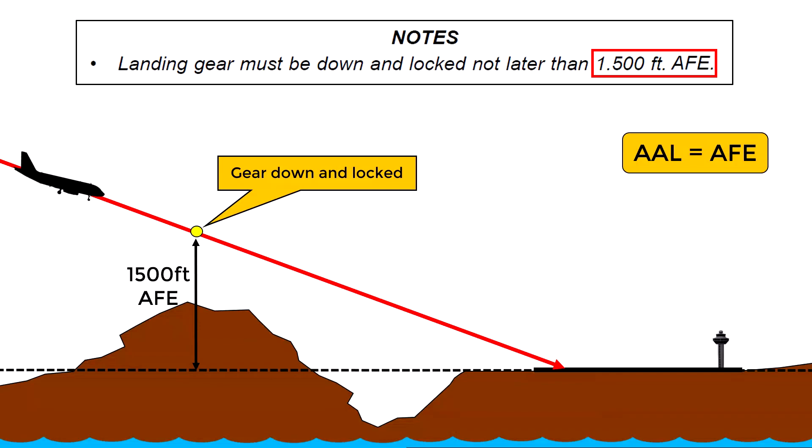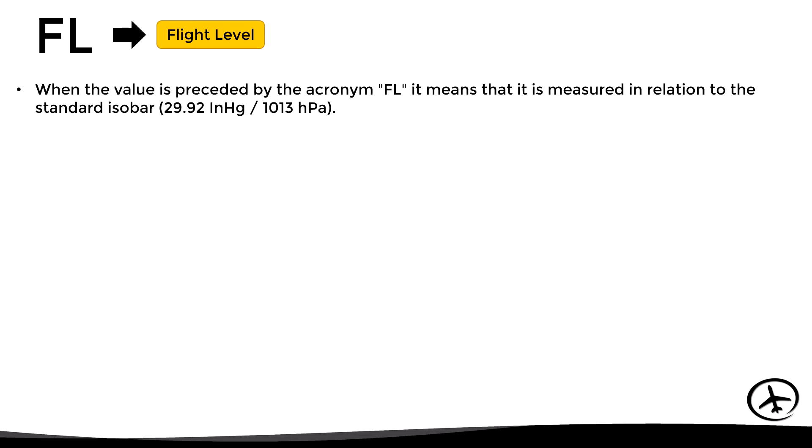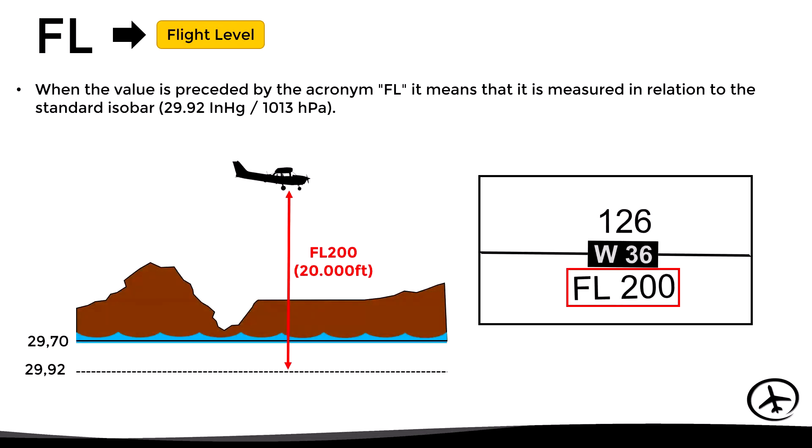Now aside from the abbreviations that we have already seen, there's another one that is widely used as well. It is FL which stands for flight level. When a value is preceded by this abbreviation, it means that it is the vertical distance between the standard isobar of 29.92 inches of mercury or 1013 hectopascals and the aircraft. As we can see in this example, 20,000 feet above the standard pressure level would be represented as flight level 200.